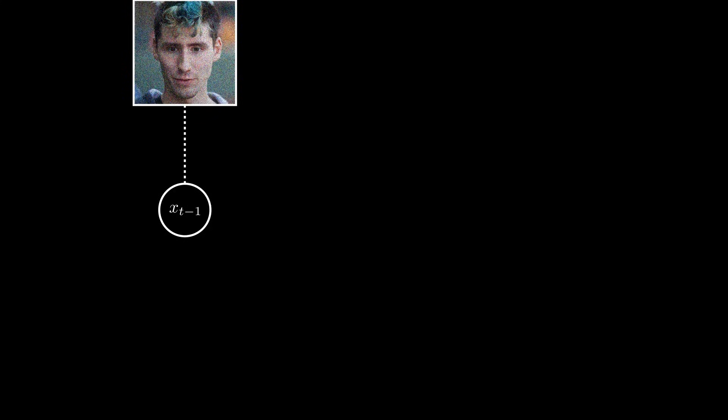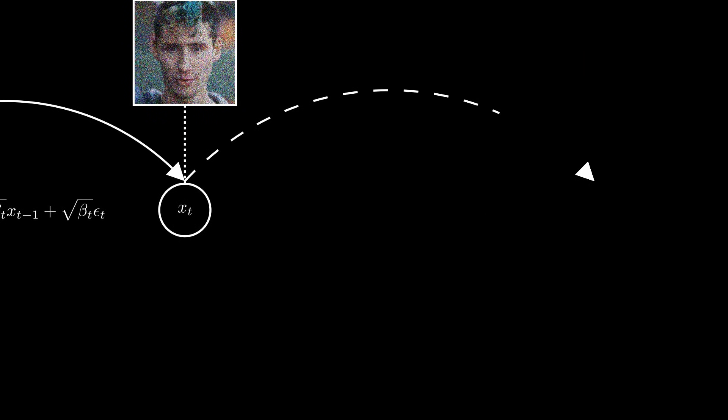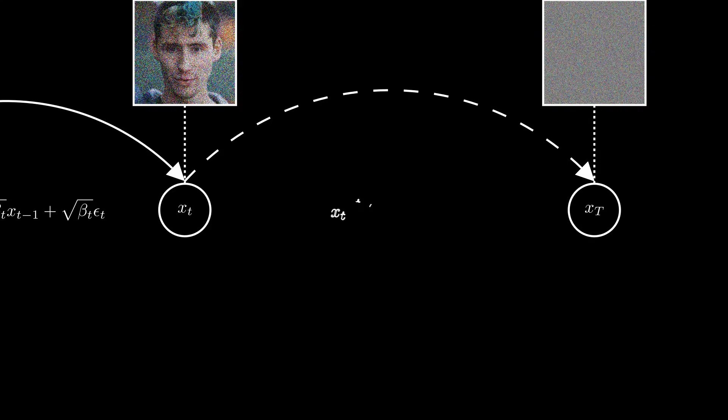In DDPM, we defined a discrete Markov chain to corrupt data step-by-step with Gaussian noise. The specific expression of this Markov chain was carefully chosen so that it converges to a normal distribution when we apply it a lot of time. And sure enough, with this expression, when T becomes very big, we end up with something looking very close to pure Gaussian noise.